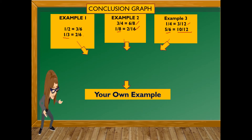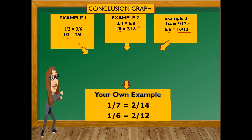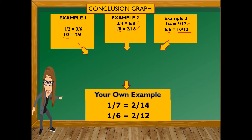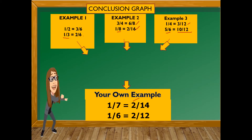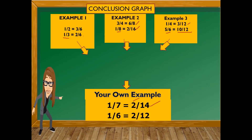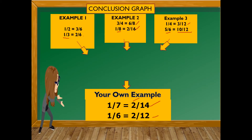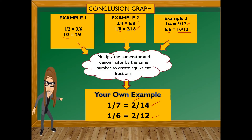Now do your own example. One-seventh multiplied by two: one times two is two, and two times seven is fourteen. Another example — one-sixth multiplied by two: one times two is two, and two times six is twelve. Therefore, multiply the numerator and denominator by the same number to create equivalent fractions.